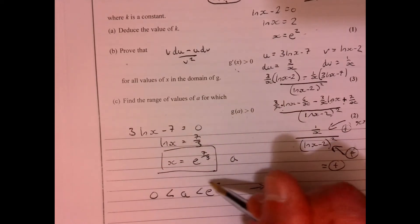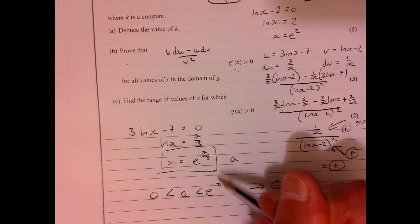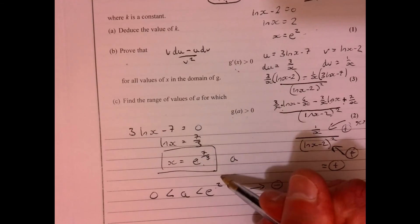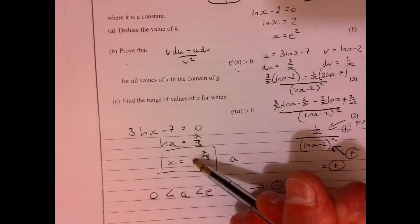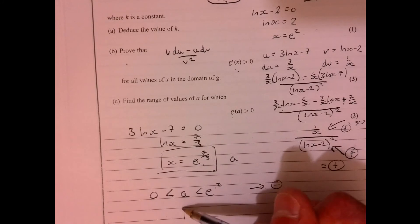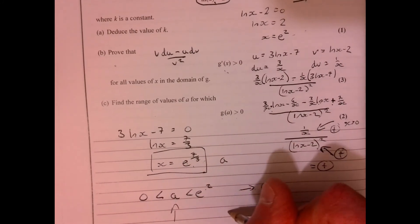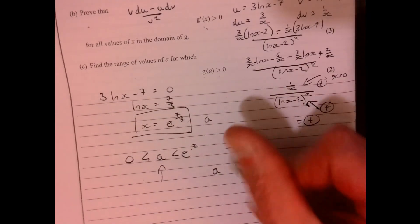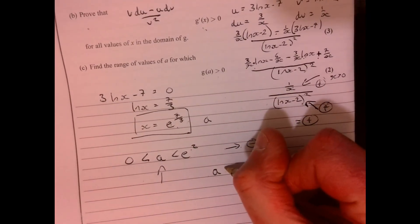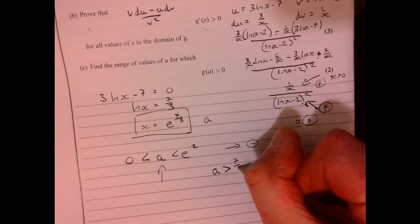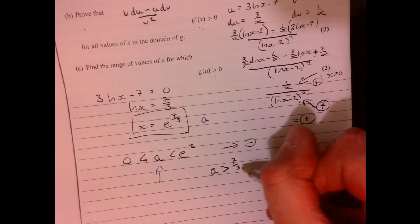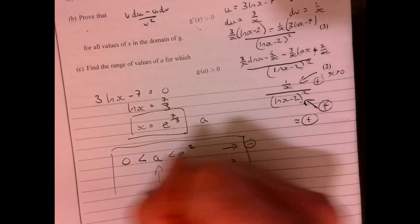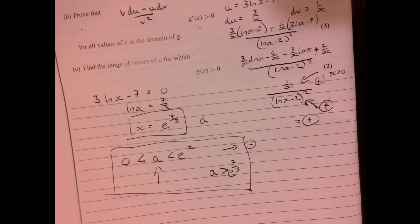So I don't want this region in between e squared and e to the 7 over 3. That's not going to work, that's not going to be positive. So I'm going to get a double negative in this region, and then also I'm going to get both bits are going to be positive in the region when A is more than e to the 7 over 3. So in those two regions, there we are.